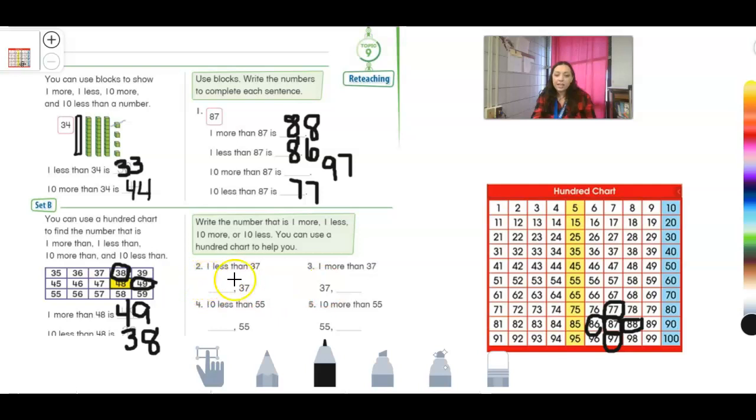All right. So now it says one less than 37. If I have 37 right here, I'm going to circle it. One less would be before. So it'd be to the left and it would be 36. Very good. So a three and a six. Good job. One more than 37 would be to the right because it's going to be a bigger number and it would be 38. Very good. One more would be 38. Good job.